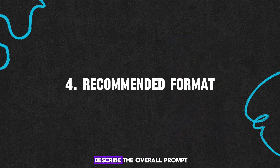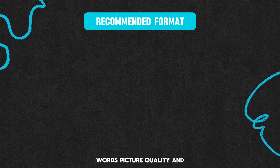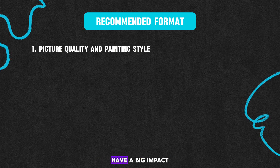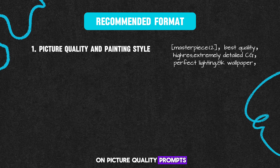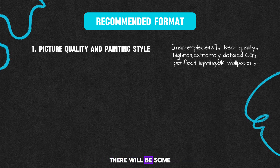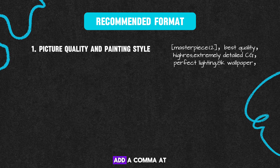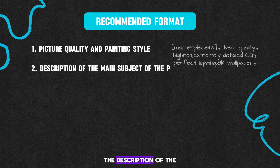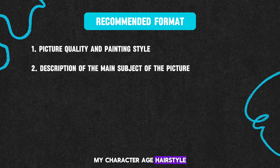After you get the hang of the basic syntax, let's check out the recommended way to describe the overall prompt words. Picture quality and painting style words have a big impact on the overall look of the picture, so it's a good idea to write them at the top. There are some tips on picture quality prompts — mostly they work for everything, but for different styles of pictures there will be some specific quality words too, like pixel style, Pixar style, or ink painting style. Then there's the description of the main subject: character, age, hairstyle, hair color, what they're doing, and so on.